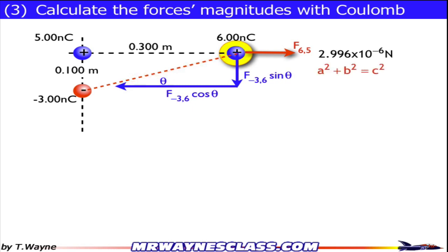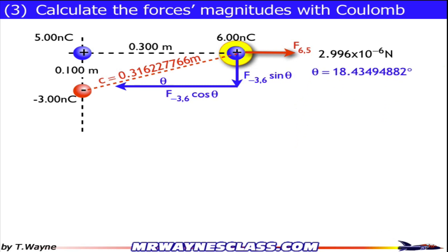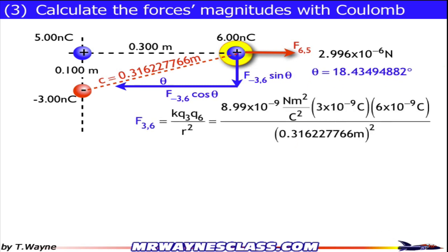Now what I've got to do is find the distance between 3 and 6, so I can use Coulomb's Law. So I'm going to use Pythagorean's Theorem. A squared plus B squared equals C squared. 0.1 meters squared plus 0.3 meters squared equals C squared. And C is 0.316 meters. So that's the distance between 3 and 6. I can also use some trig to figure out the angle. So inverse tangent of 0.1 over 0.3, and that gives me an angle of 18.43 degrees.